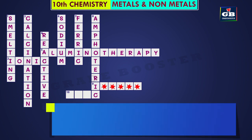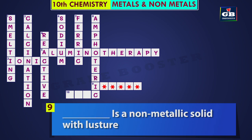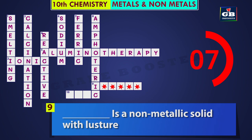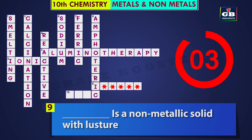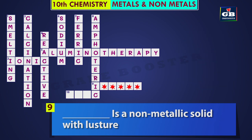Nine across: dash is a non-metallic solid with luster. Did you get the answer? It is iodine. Iodine is a non-metallic solid with luster.